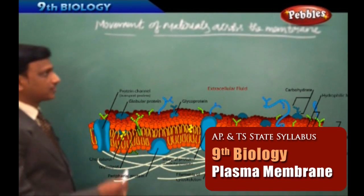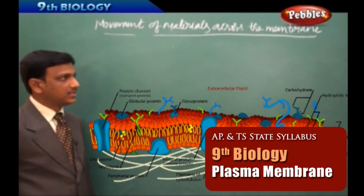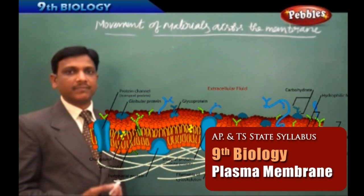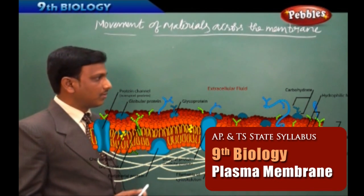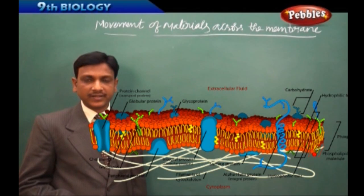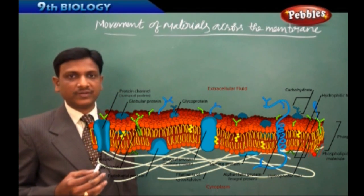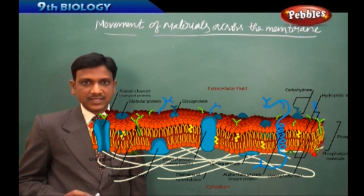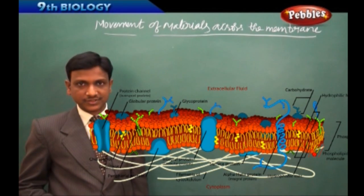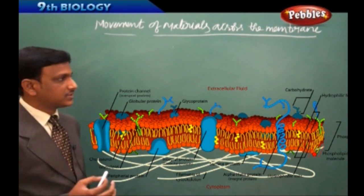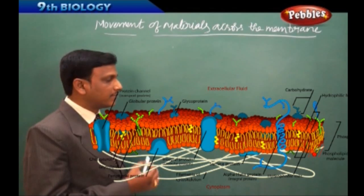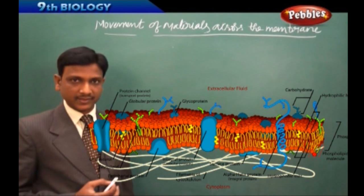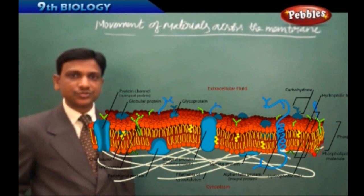In this lesson we are going to study about the movement of materials across the membrane of a cell. In the previous lesson we studied that all living organisms are made up of cells, and the cells have different parts which perform specific functions. In this chapter we are going to learn more about the cell membrane, which allows materials to pass through it — getting into and out of the cell.